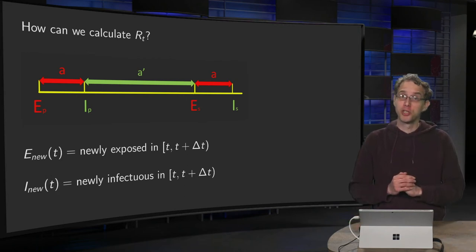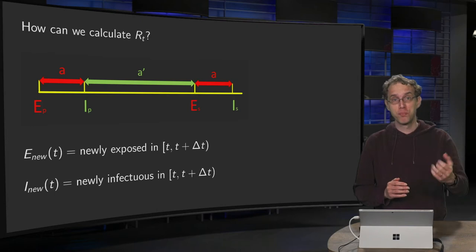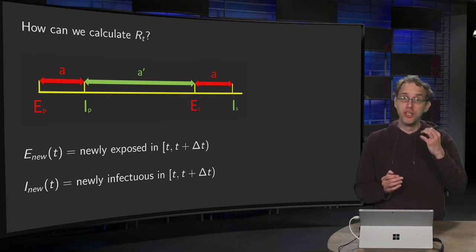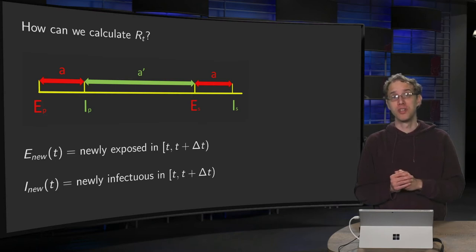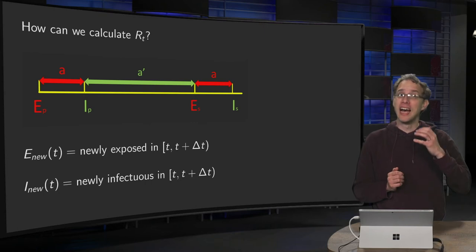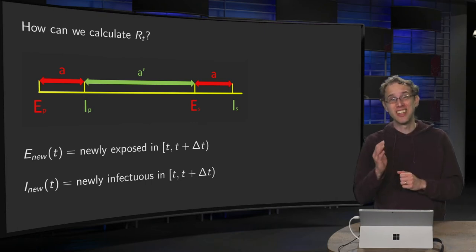Given all the epidemiological data, like the number of exposed, infected, and recovered people as a function of time, we should be able to compute the reproduction number R_t, right? Yes we can, but it's not that easy.